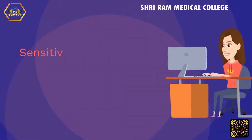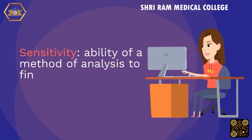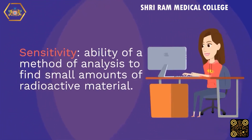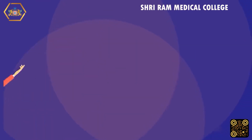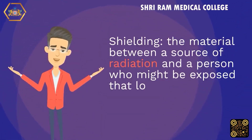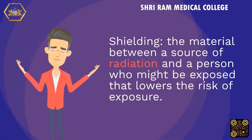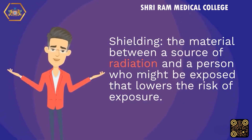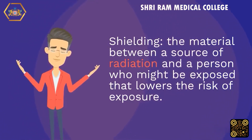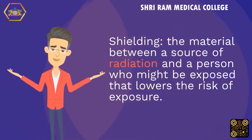Sensitive: the ability of a method of analysis to find small amounts of radioactive material. Shielding: the material between a source of radiation and a person who might be exposed that lowers the risk of exposure.